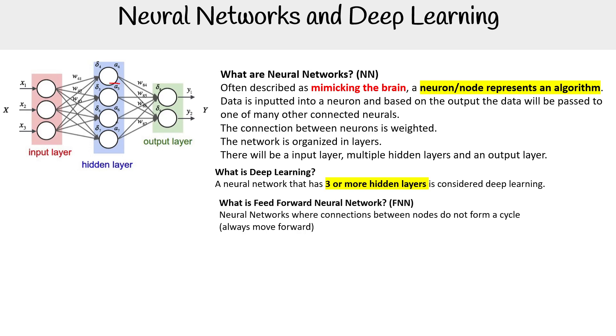Then there's the concept of a Feed Forward Neural Network, which is initialized FNN. These are neural networks where connections between nodes do not form a cycle. That means that they always move forward, so data moves forward. We don't have neural networks going back in this way, they're just going one direction, which is forward.